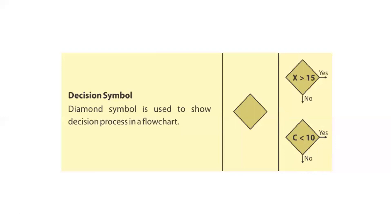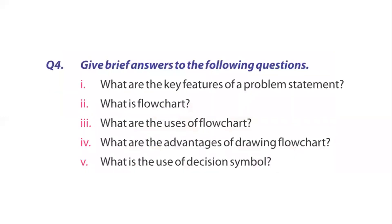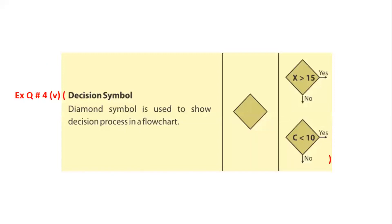Since these are standard flowchart symbols, we have completed exercise question number five part three. Now we will move towards exercise question number four part five: 'What is the use of the Decision symbol?' We have already discussed the decision symbol - it is also known as the diamond symbol.